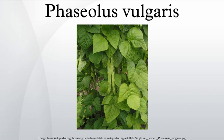Description. The common bean is a highly variable species with a long history. Bush varieties form erect bushes 20 to 60 cm tall, while pole or running varieties form vines 2 to 3 meters long. All varieties bear alternate, green or purple leaves, which are divided into three oval, smooth-edged leaflets.